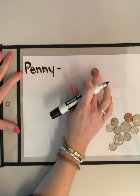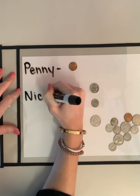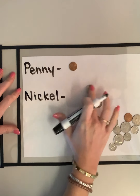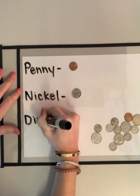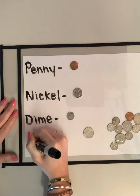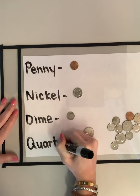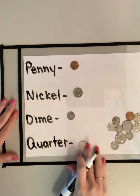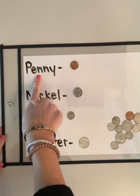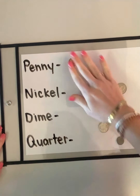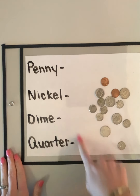We're going to count and use tally marks today to figure out how many of each of these four coins Ms. Saucedo had in her purse. First I'm going to write down the name of each coin: penny, nickel, dime, and quarter. Now we need to count and figure out how many pennies I have. I know that pennies are a different color than the rest of these coins.